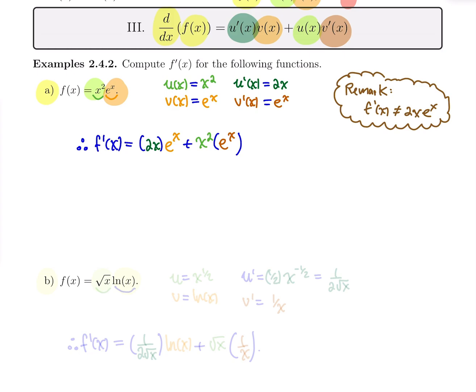Just be careful: see that it's a product, label u, label v, compute u prime, compute v prime, and then combine correctly.